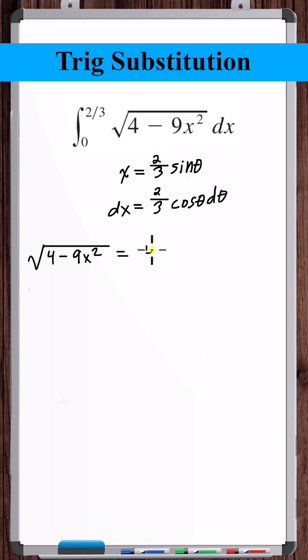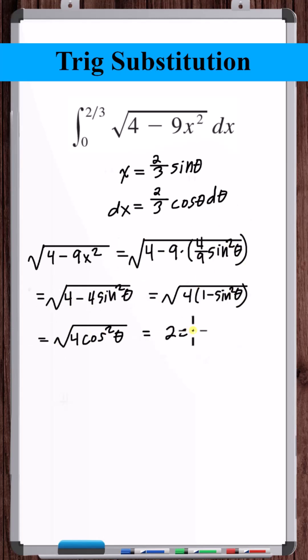Substituting x into the square root of 4 minus 9x squared, this simplifies to 2 cosine theta. So now substituting everything into the integral.